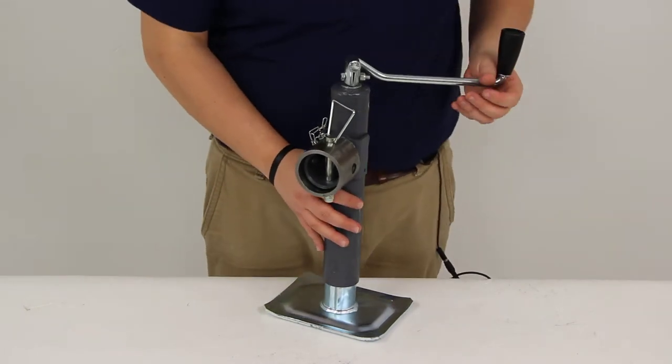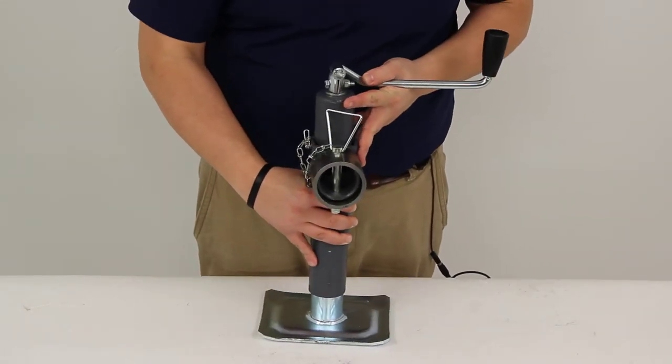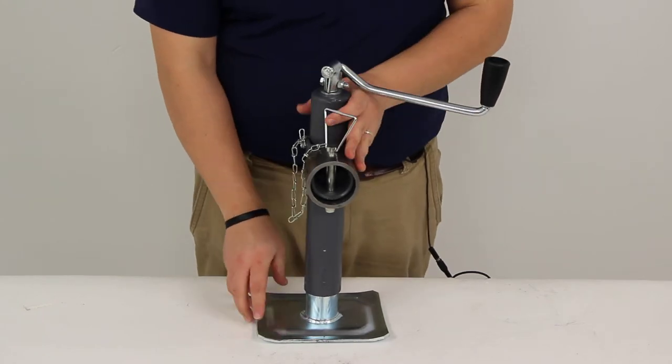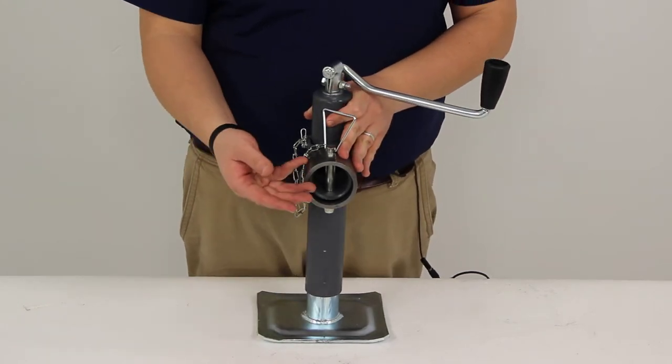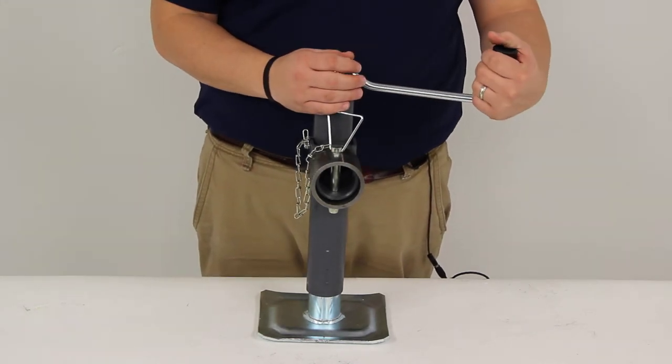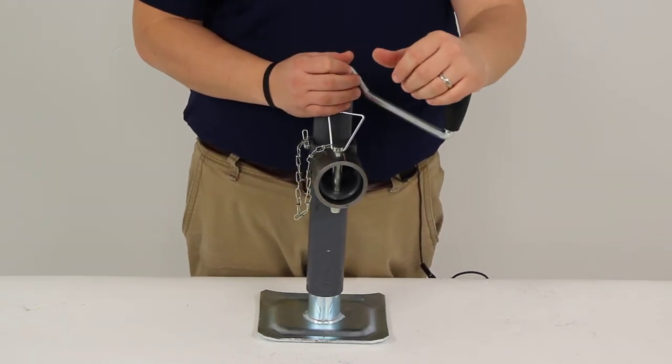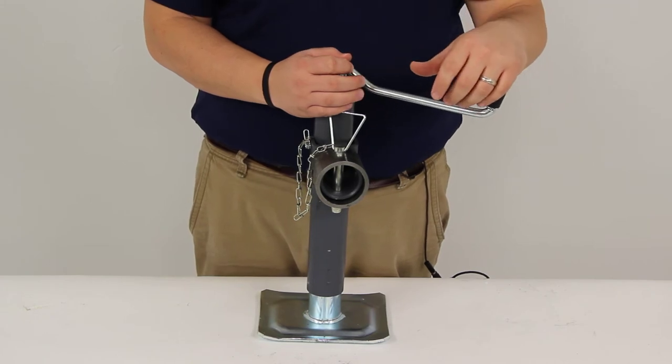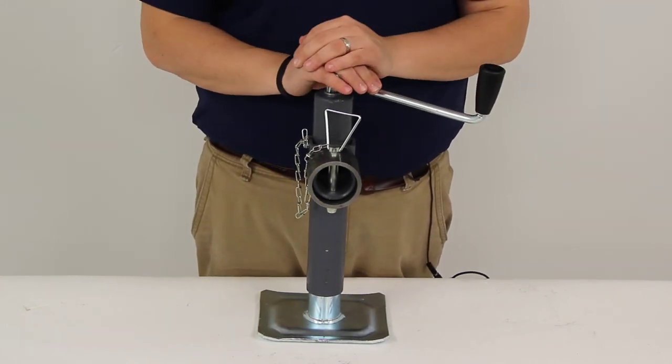When this is fully retracted we have a measurement of 10 and 13 sixteenths. That's from the ground to the center of our bracket. When it's fully extended that measurement increases to 20 and 13 sixteenths. So if we subtract those two measurements we're left with a lift measurement of 10 inches.